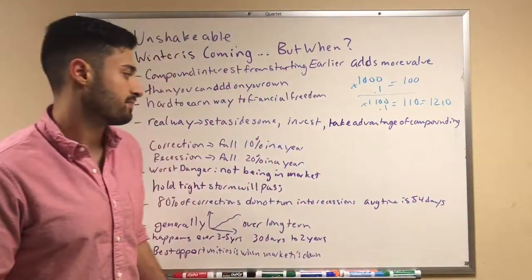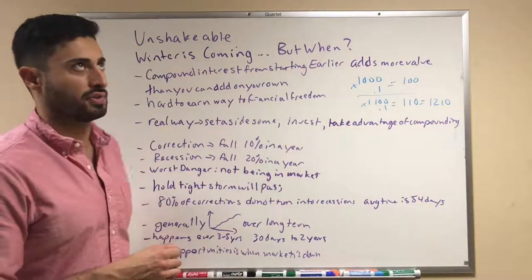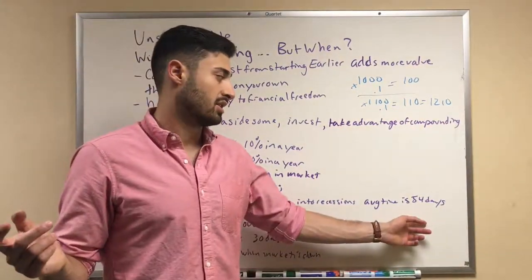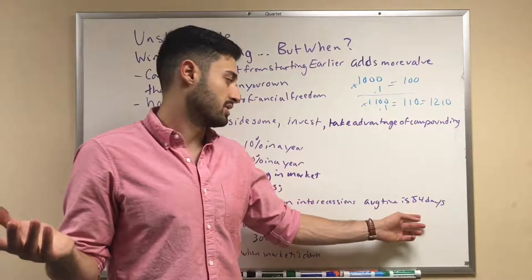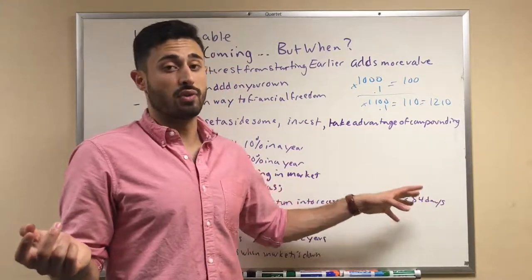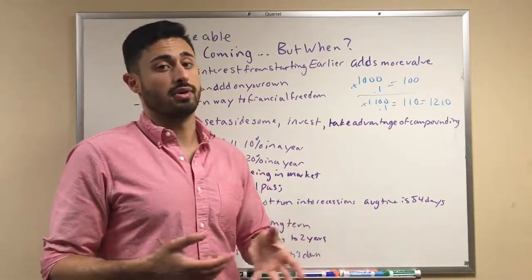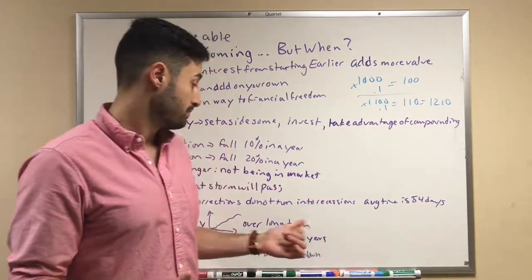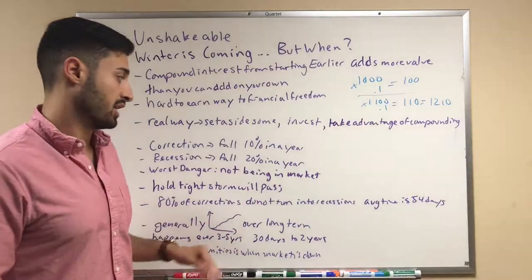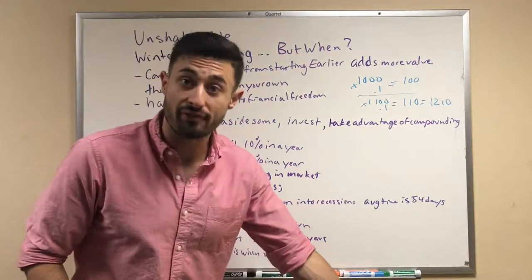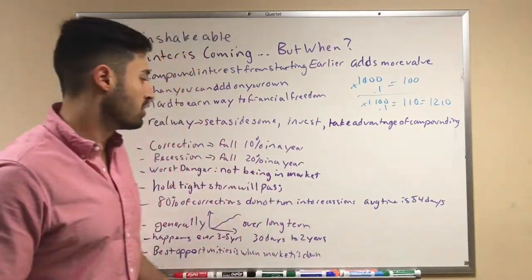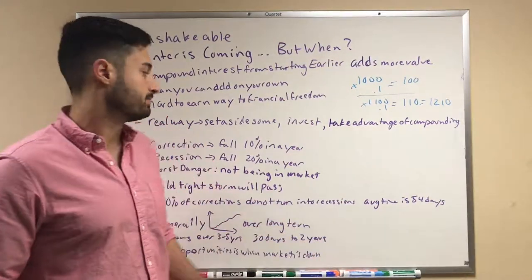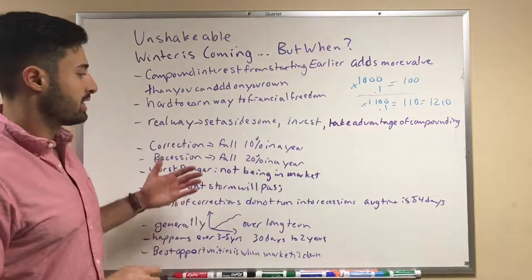54 days—there's 365 days in a year, 364 depending on what year it is. 54 days is a very small time period for it to drop, but the rest of the time that means it's not down 10%. It could be down 1%, it could be up 50%—you have no idea. But you need to be in the market to take advantage of that. Now recession, on the other hand, that happens when the market falls 20% in a year.